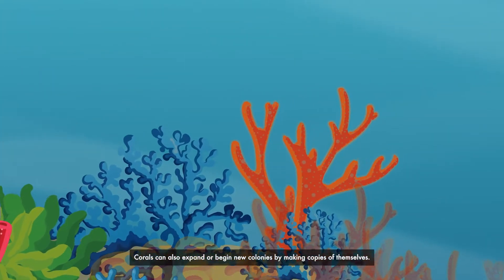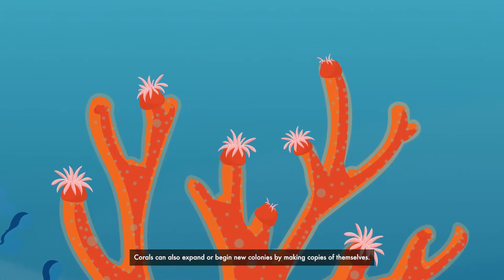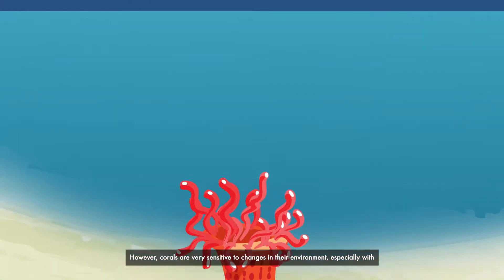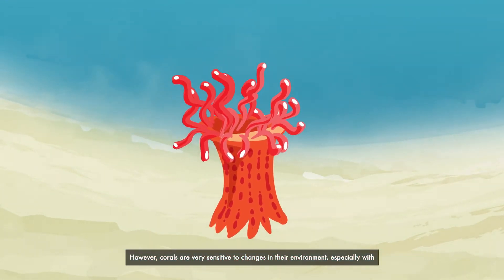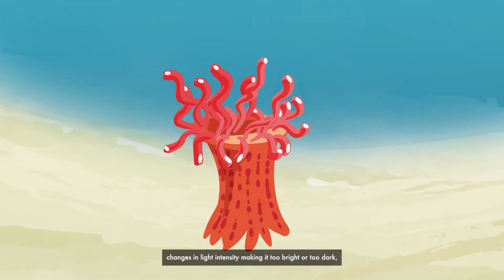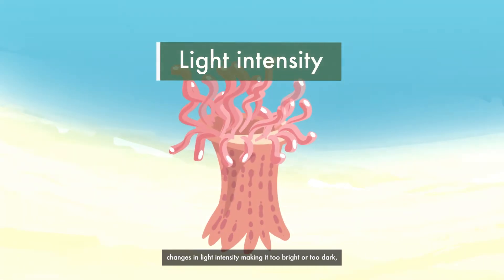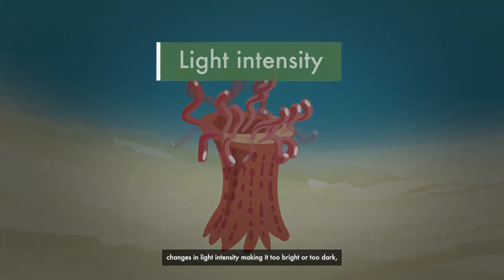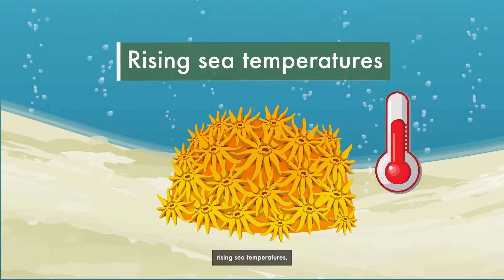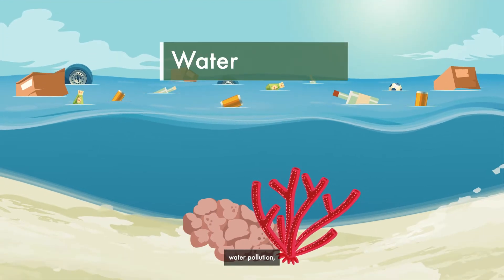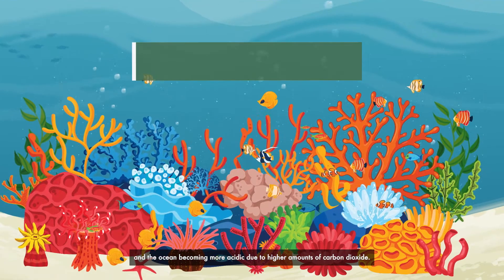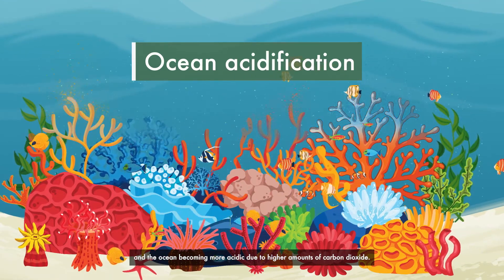Corals can also expand or begin new colonies by making copies of themselves. However, corals are very sensitive to changes in their environment, especially with too much sand in the water, changes in light intensity making it too bright or too dark, rising sea temperatures, water pollution, and the ocean becoming more acidic due to higher amounts of carbon dioxide.